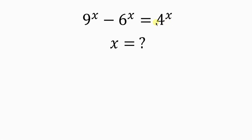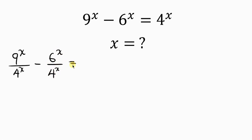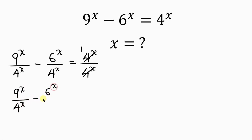Our first step will be to divide through by 4 to the x. So the first term is 9 to the x divided by 4 to the x, minus the second term 6 to the x divided by 4 to the x, equals 4 to the x divided by 4 to the x. Notice that 4 to the x divided by 4 to the x gives 1, so we have 9 to the x over 4 to the x minus 6 to the x over 4 to the x equals 1.